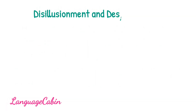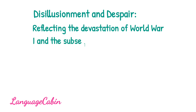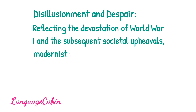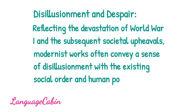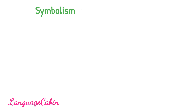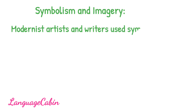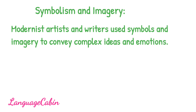Disillusionment and despair. Reflecting the devastation of World War I and the subsequent societal upheavals, modernist works often convey a sense of disillusionment with the existing social order and human potential. Symbolism and imagery. Modernist artists and writers used symbols and imagery to convey complex ideas and emotions, often requiring readers to engage actively with the text to uncover deeper meanings.